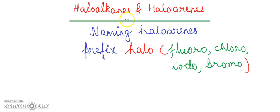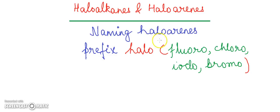Welcome to the chemistry class. Today we are going to learn the topic haloalkanes and haloarenes. In this, we will learn about the nomenclature of haloarenes. Haloarenes are the halogen compounds that contain the benzene ring and a halogen element. These are organic compounds, so we will learn about the naming of haloarenes.